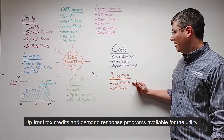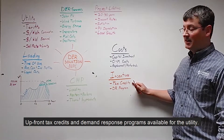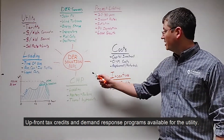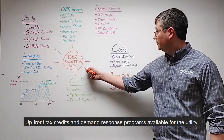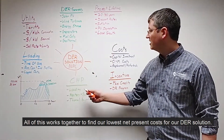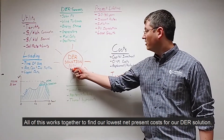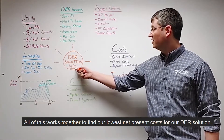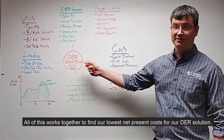And finally, incentives — including upfront tax credits and demand response programs available from the utility. All of this works together to find our lowest net present cost DER solution.